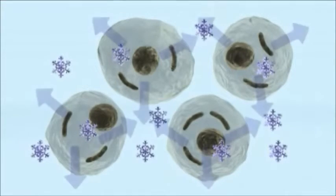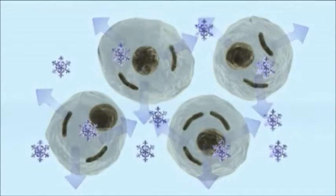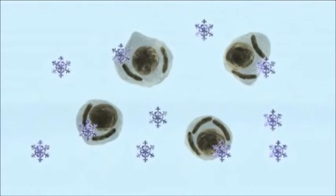DMSO acts as an antifreeze. It permeates the cells and allows water to escape from them. Slowly, as the cells freeze, they become dehydrated and therefore escape the damaging action of ice crystal formation.